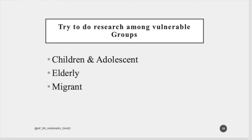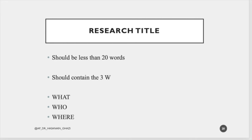Try to do research among vulnerable groups such as children under five, adolescents aged 11 to 19, the elderly, and migrants. Migrant and refugee health is a very hot topic given the conflicts and natural disasters around the world — choosing this topic gives you a higher chance of getting published. Also remember that a research title should be less than 20 words and contain the three W's: what, who, and where — always include the location of your study.